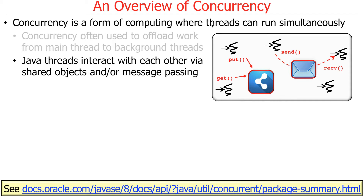Threads can interact with each other via several different techniques that fall into two general categories: shared objects or shared memory, and message passing, either local or remote. Assuming all code runs in one address space — one process — you can either have objects shared by multiple threads via method calls, or threads can pass messages back and forth. This generalizes if you end up with threads in multiple processes, but we won't cover that right now.